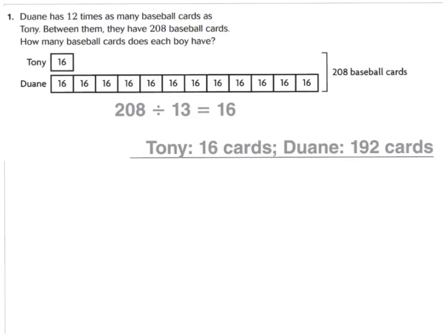So because our essential question is drawing a diagram, that's what we're going to do today. Let's look at question number one. It's already done for you. It says Dwayne has 12 times as many baseball cards as Tony. Between them they have 208 baseball cards. How many baseball cards does each boy have?